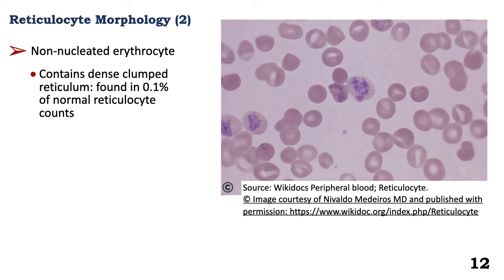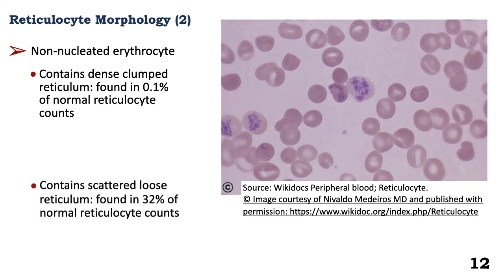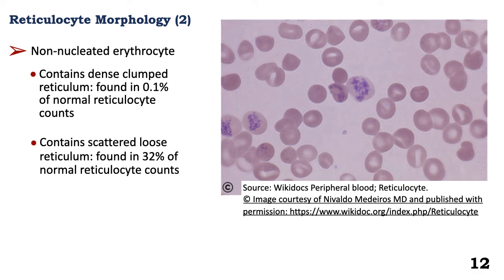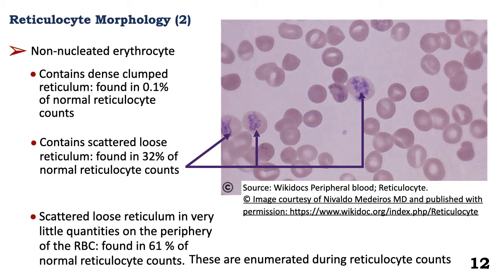After the nucleus has been extruded, we have non-nucleated erythrocytes. They are not yet mature and still contain reticulum. Such reticulocytes may have this reticulum clamped closely, and this can be found in 0.1% of the normal reticulocyte counts. The chromatin may be scattered loosely within the body of the cytoplasm, which is found in 32% of the reticulocyte counts. Or the chromatin may be scattered in little quantities on the periphery of the red blood cell, found in 60% of the normal reticulocyte counts — and these are the reticulocytes that are enumerated.